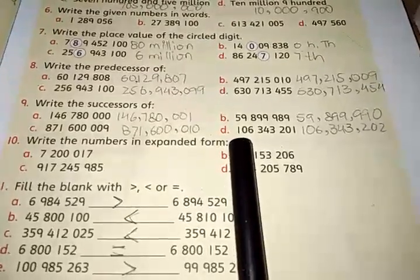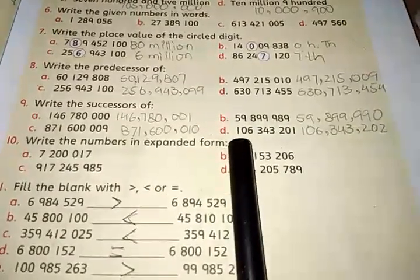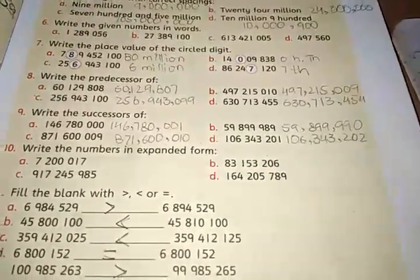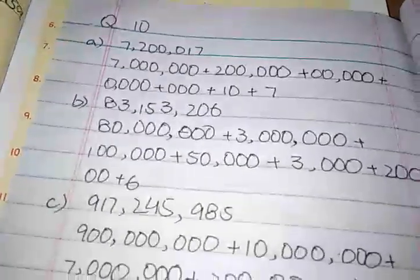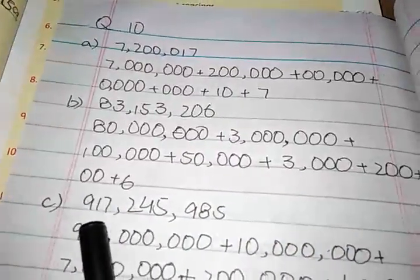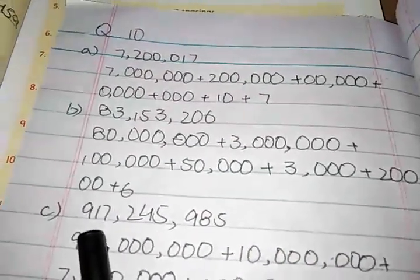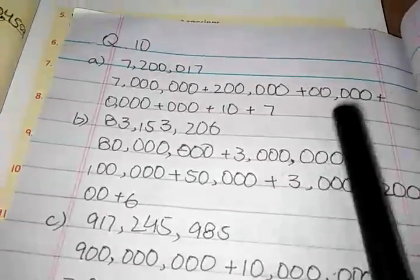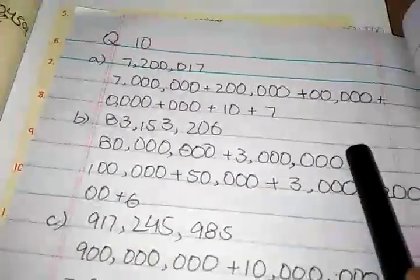Question number 10 is write the number in expanded form. Students, in expanded form we have to write the numbers in millions, hundred thousands, ten thousands, thousands, hundreds, tens and ones.